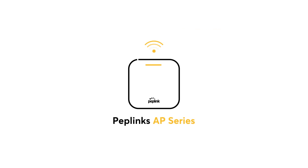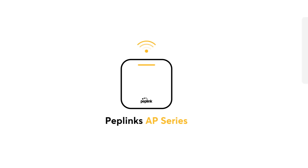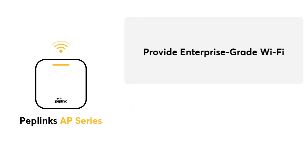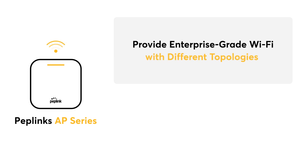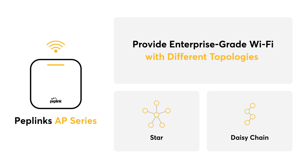All this can be achieved using Peplink's access points from Peplink's AP series. The benefits of using Peplink's AP devices for setting up a WDS are that you can provide enterprise-grade Wi-Fi for any environment with different topologies, such as using a star or daisy chain.